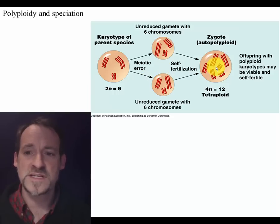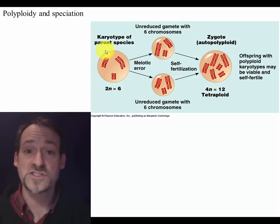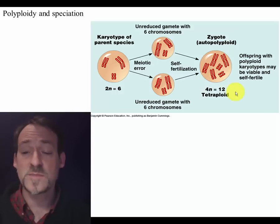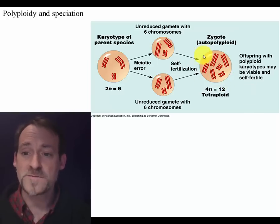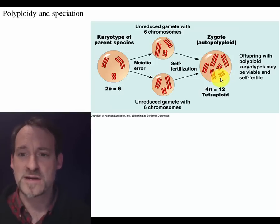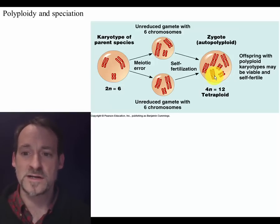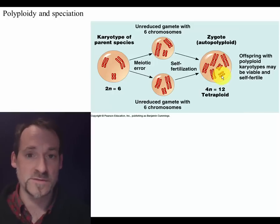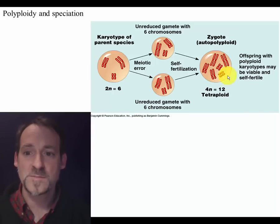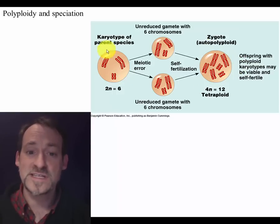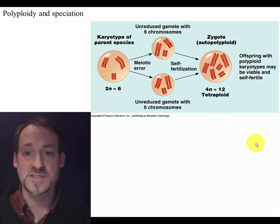If two of these gametes meet up, you get an offspring that has double the parent's genome. The interesting thing about this offspring is that it may be quite viable. It has all of the genes that are necessary to make a new organism, and none of them are mispaired. It's not as though it only has one unpaired version of any one of these chromosomes. But this offspring cannot interbreed with any individual from the parent species.